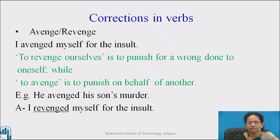In English grammar, there are some verbs which always confuse us. For example, avenge and revenge. See the example: 'I avenge myself for the insult.' As a rule, to revenge oneself is to punish for a wrong done to oneself, while to avenge is to punish on behalf of another. For example, 'He avenged his son's murder.' That's why in the above sentence the correct verb form should be revenge: 'I revenged myself for the insult.'